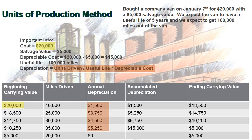At the end of Year 4, the carrying value reaches the salvage value. In Year 5, even though we drive more miles, we don't depreciate the asset any further. With units of production, it's the miles that matter, not time. Once the total expected miles are exhausted, we stop depreciating the asset.